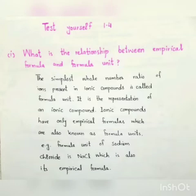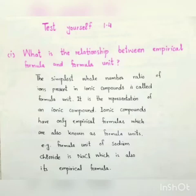So, for ionic compounds, the formula unit and empirical formula are the same. For sodium chloride, the formula unit is NaCl, which is also its empirical formula. This is the relationship between them.